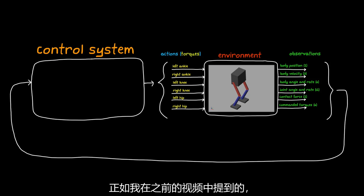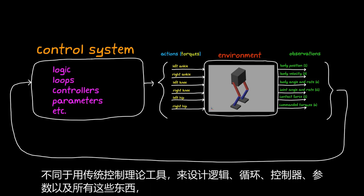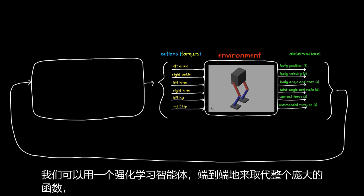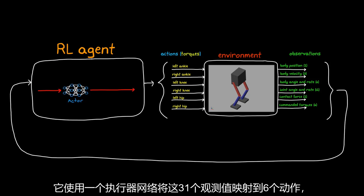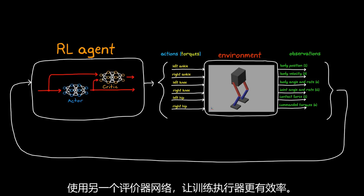Now as I mentioned in previous videos, rather than try to design the logic, the loops, the controllers, the parameters, and all that stuff using the traditional tools of control theory, we can replace this whole massive function end-to-end with a reinforcement learning agent, one that uses an actor network to map these 31 observations to the six actions, and a critic network to make the training more efficient.